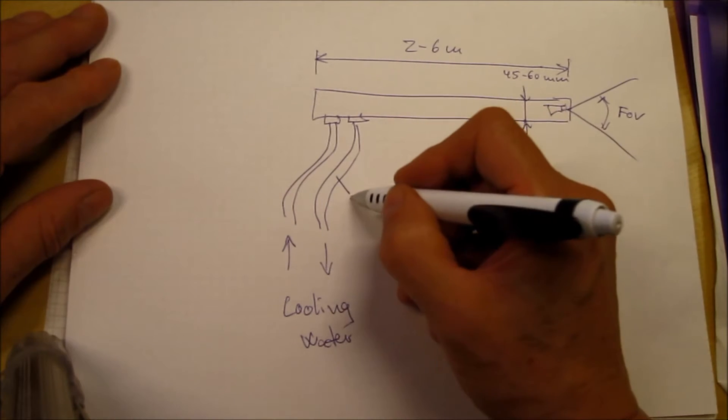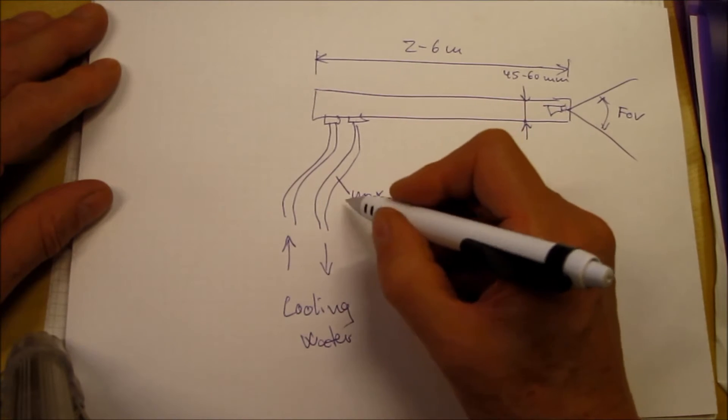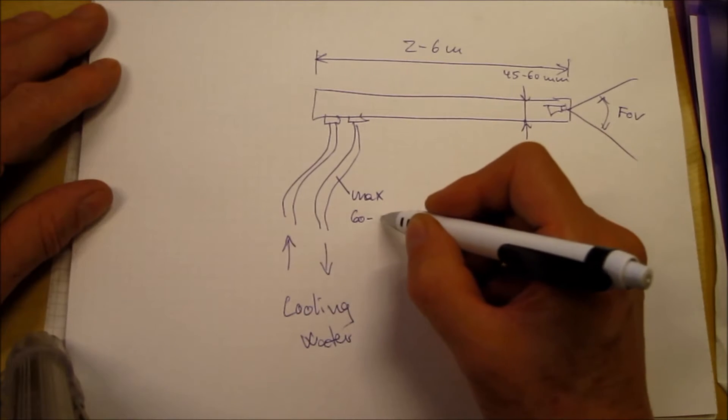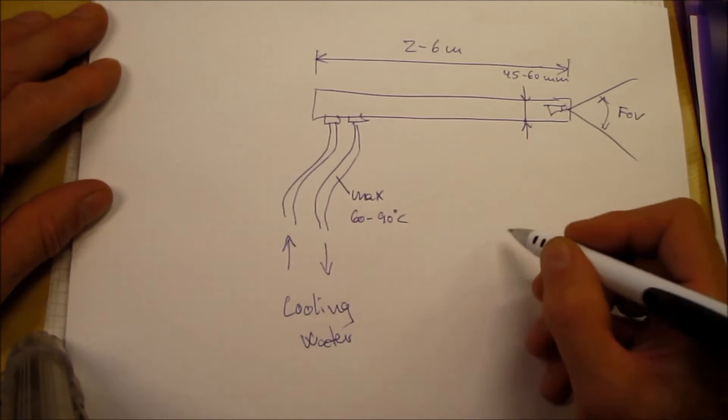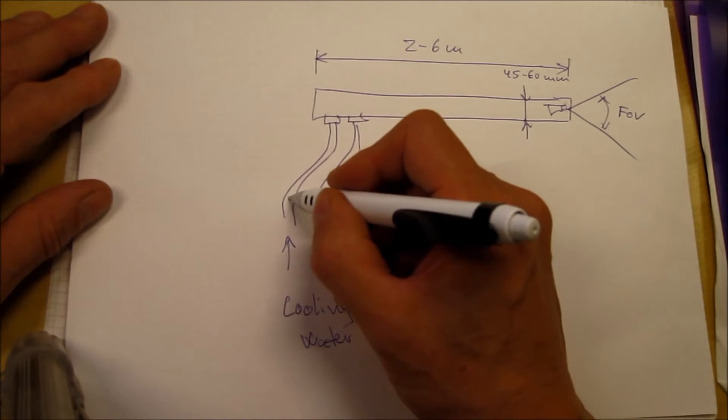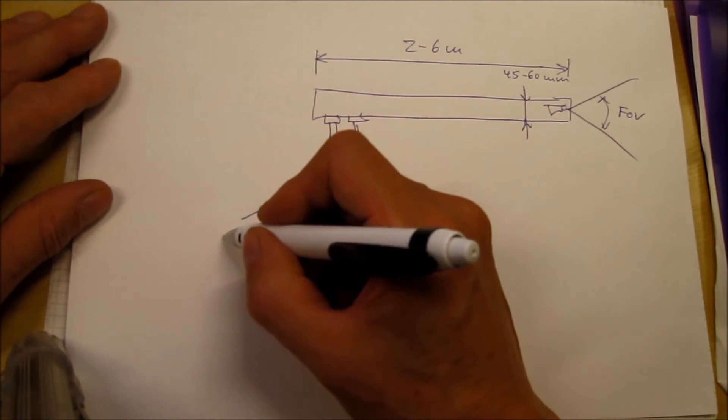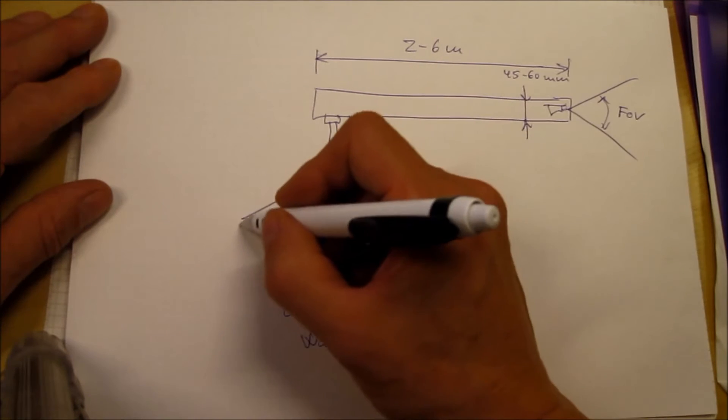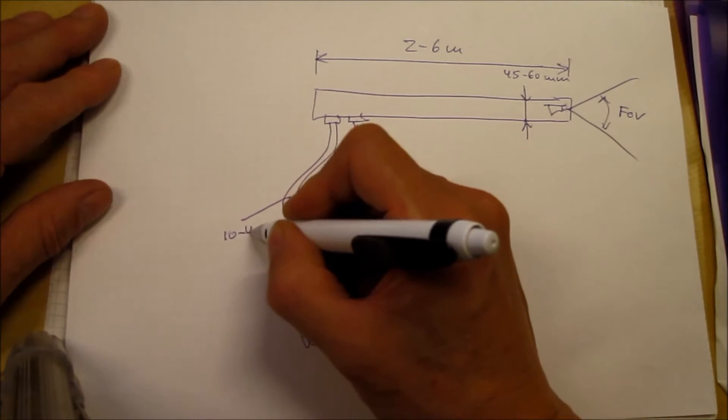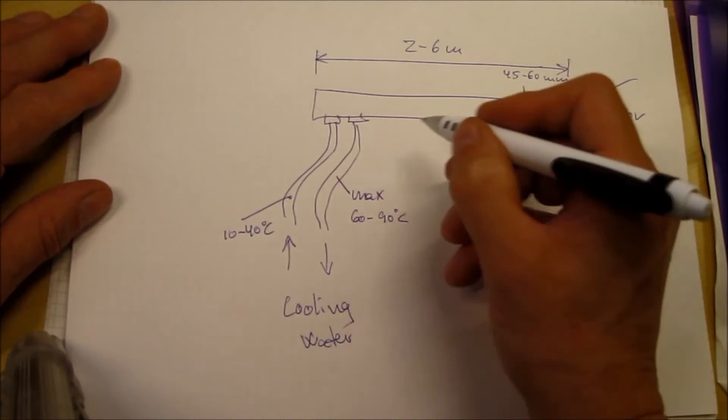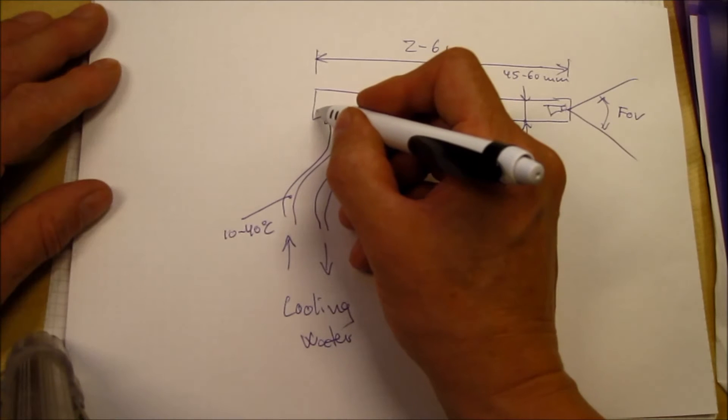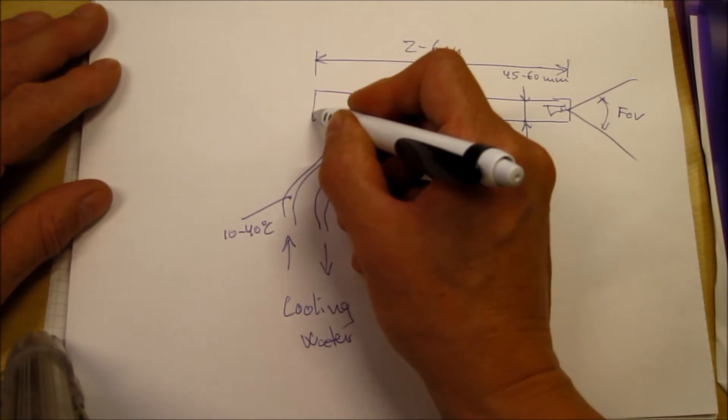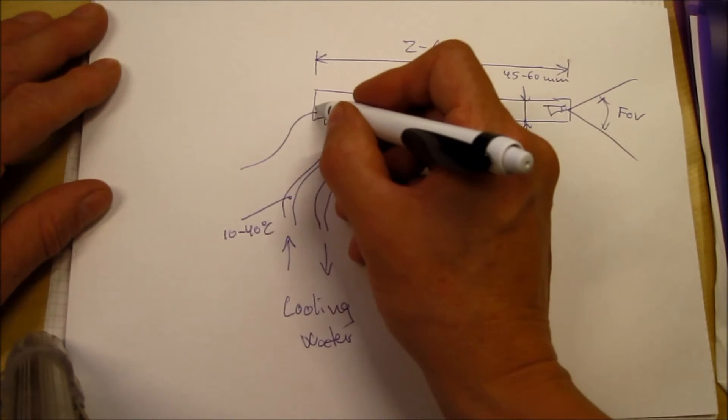The max outlet temperature is typically 60 to 90°C and inlet water temperature could be anything from up to, let's say, 10 to 40°C typically. Then there's a compressed air connection.